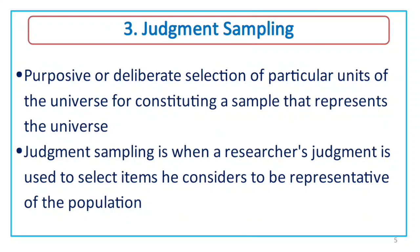Judgment sampling, also called purposive or deliberate selection, involves selecting particular units of the universe to constitute a sample that represents the universe. Judgment sampling is when a researcher's judgment is used to select items he or she considers to be representative of the population. A disadvantage is the possibility of personal bias in the selection.